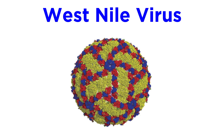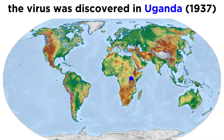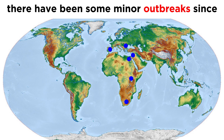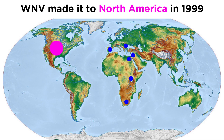Compared to some of the other pathogens we've covered, West Nile is a relatively newer disease. It was first discovered in the West Nile district of Uganda in 1937, and then a few outbreaks popped up in other areas of Africa and the Middle East. We've seen relatively minor outbreaks here and there since, with one major outbreak in Israel in the 1950s and another in Romania in the mid-1990s. It wasn't until 1999 that West Nile virus, or WNV, was introduced to North America.